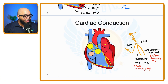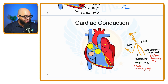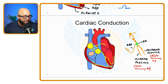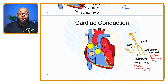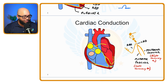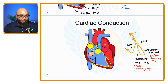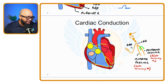Go to page nine in your workbook — this is the conduction system pulled away from the heart itself. The left bundle branch is actually divided into two separate fascicles: a fascicle in the front called the anterior fascicle, and one in the back called the posterior fascicle.